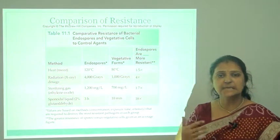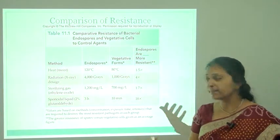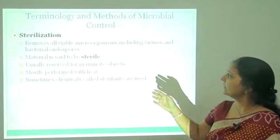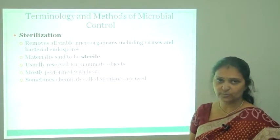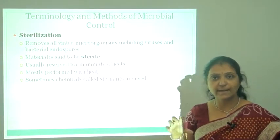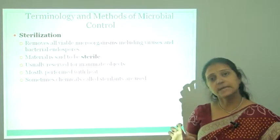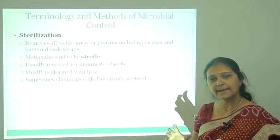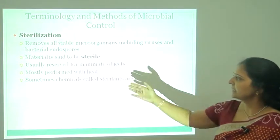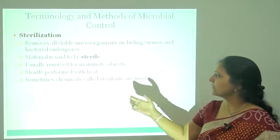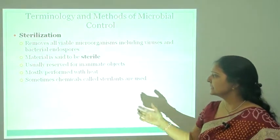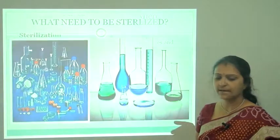Spores require all sterilizing agents in higher amounts than the vegetative form. Sterilization removes all viable microorganisms including viruses and bacterial endospores — it is the complete removal of all living organisms. Material is said to be sterile, a term usually reserved for inanimate objects, mostly sterilized with heat and sometimes chemical or cold methods.